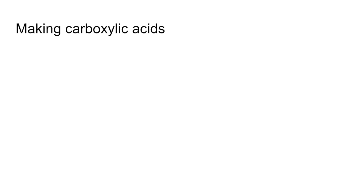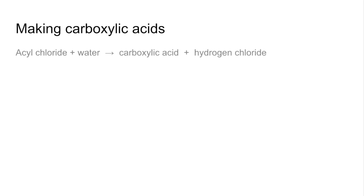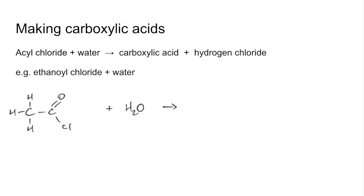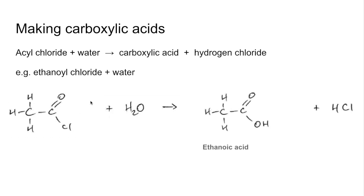Moving on to making carboxylic acids. Remember this is what happens if there's any water present when you make your acyl chloride. Acyl chloride plus water gives carboxylic acid and hydrogen chloride. The example here is ethanoyl chloride plus water. We take an H from the water molecule, combine it with the Cl, and put the OH that's left onto the acyl group. So the product is ethanoic acid, the carboxylic acid.